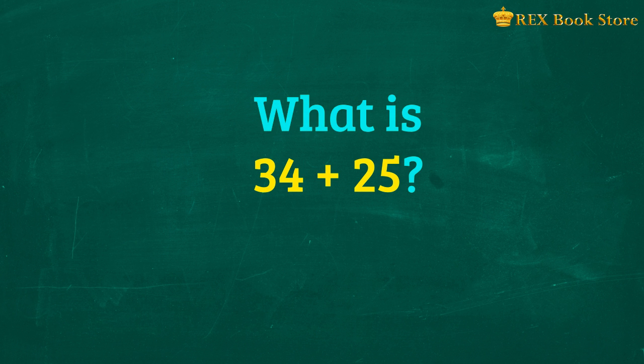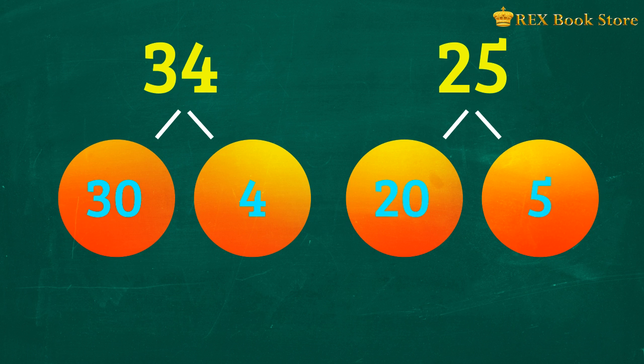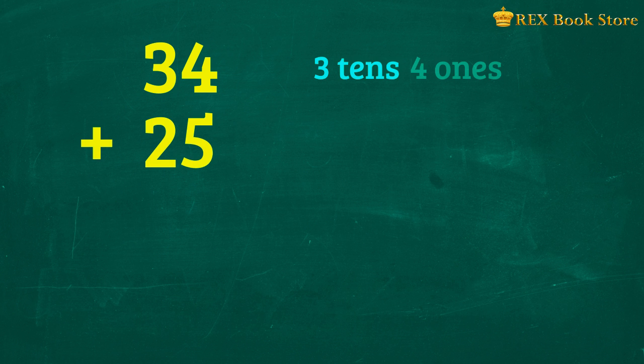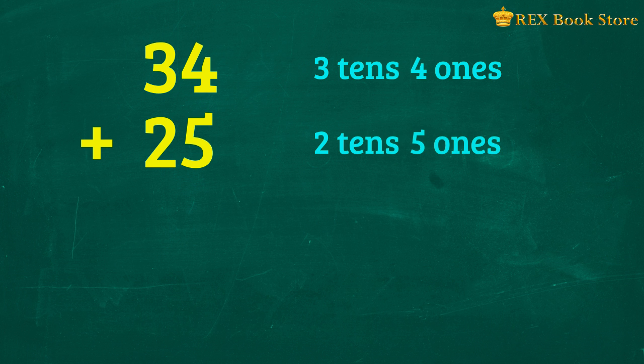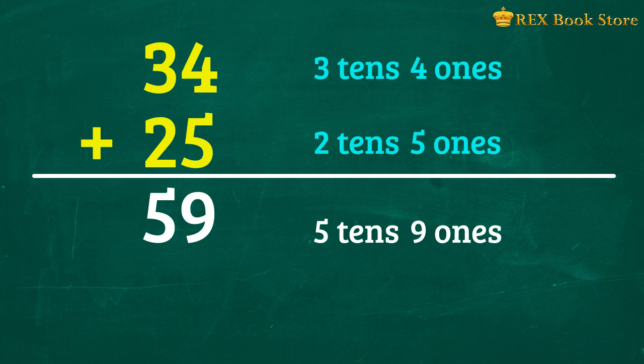Let's move on to a couple of exercises. Can we solve 34 plus 25 using number bonds? 34 can be written as 30 and 4. While 25 can be written as 20 and 5. From the number bonds, we can write the following addition sentences. 34 plus 25 is 3 tens, 4 ones, plus 2 tens, 5 ones. Add the tens and ones together. 3 plus 2 and 4 plus 5 to get 5 tens, 9 ones or 59. So 34 plus 25 is equal to 59.